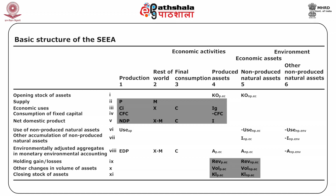For produced economic assets: opening stocks K₀_P.EC plus net investment I, plus or minus adjustments REV_P.EC and VOL_P.EC, gives closing stocks. For non-produced economic assets, the entries EV_NP.EC and VOL_NP.EC denote corresponding adjustments to opening stocks K₀_NP.EC, resulting in closing stocks K₁_NP.EC. VOL_NP.EC reflects other changes in the volume of assets, such as changes in known economic reserves or natural assets.